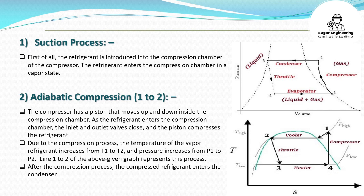Due to the compression process, the temperature of the vapor refrigerant increases from T1 to T2, and pressure increases from P1 to P2. Line 1 to 2 of the above given graph represents this process. After the compression process, the compressed refrigerant enters the condenser.